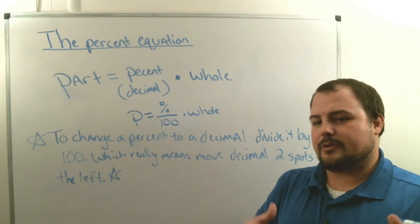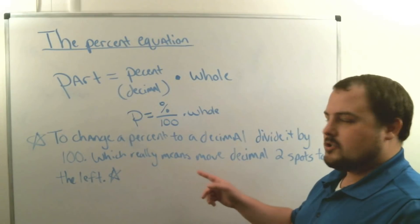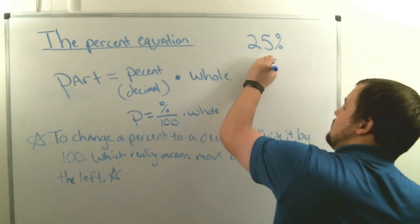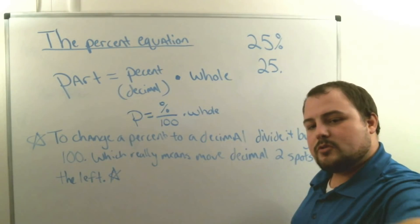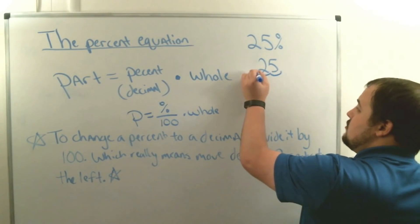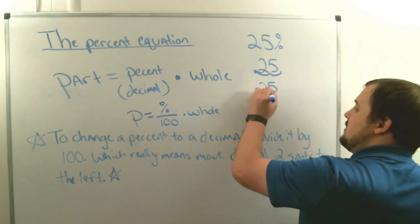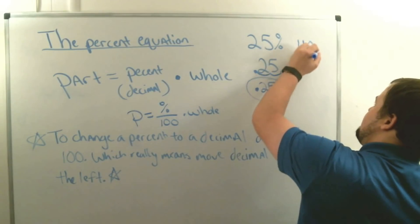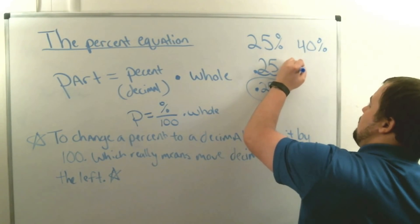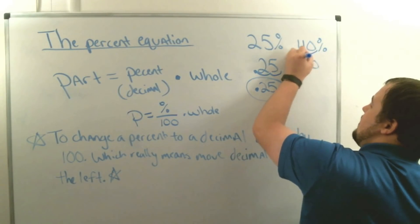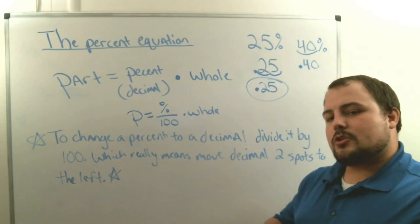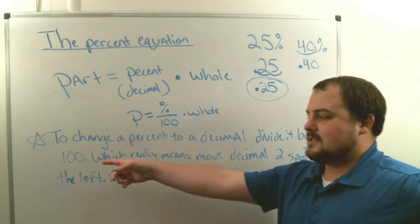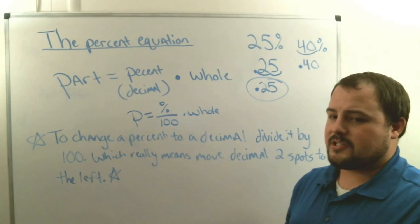To get the percent as a decimal a little quicker, just put a decimal behind the percent number and move it two spots to the left. For example, 25% — write 25, put a decimal behind it, move it two spots left, and you get 0.25. For 40%, you move the decimal two spots left to get 0.40. Moving the decimal two places left is the same as dividing by 100.